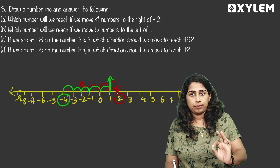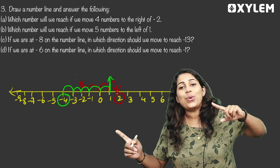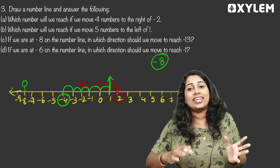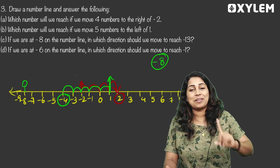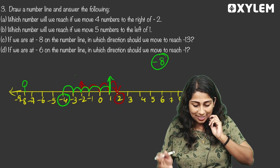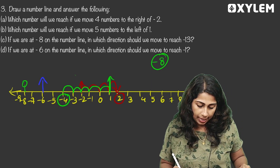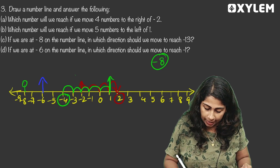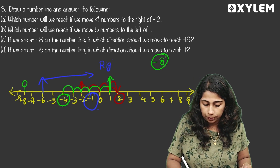If we are at negative 8, in which direction should we move to reach negative 13? Negative 13 is to the left, so we move left. If we are at negative 6, in which direction should we move to reach negative 1? We move to the right.